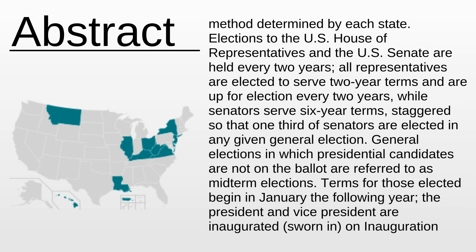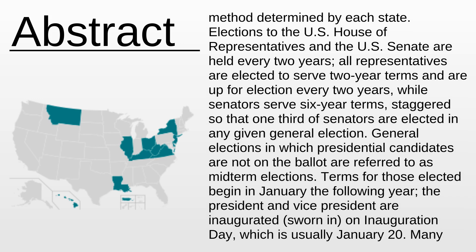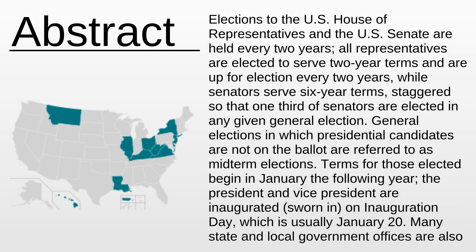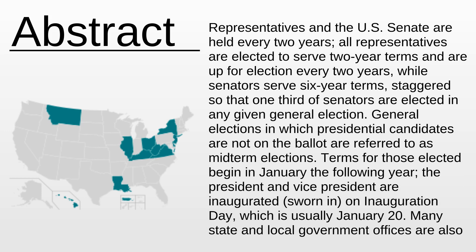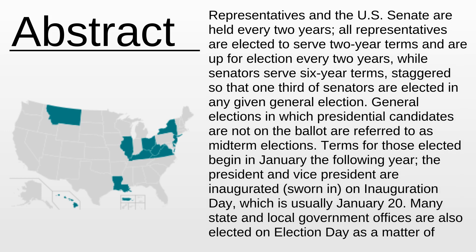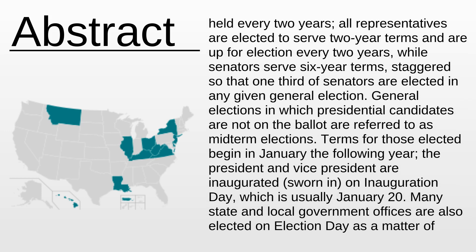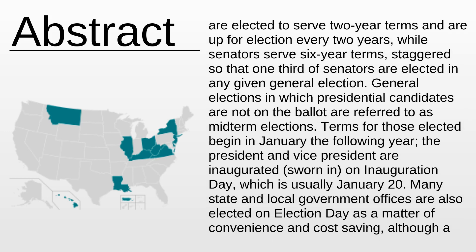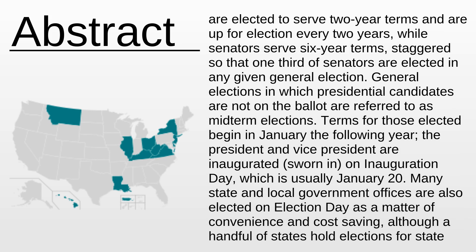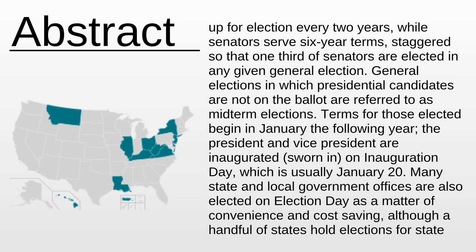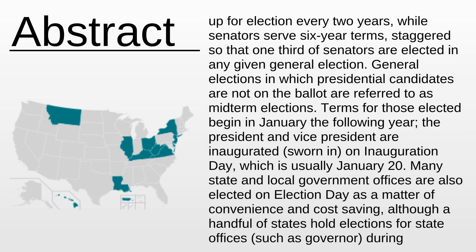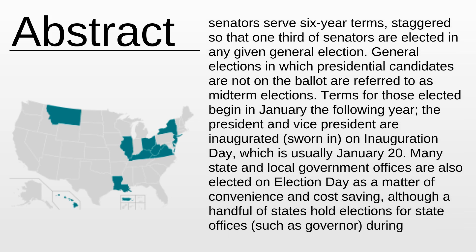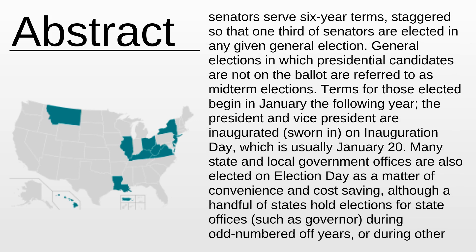Elections to the U.S. House of Representatives and the U.S. Senate are held every two years. All representatives are elected to serve two-year terms and are up for election every two years, while senators serve six-year terms, staggered so that one-third of senators are elected in any given general election.